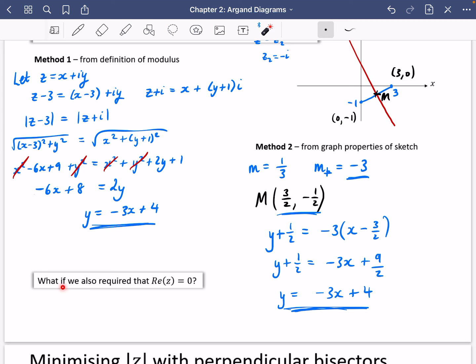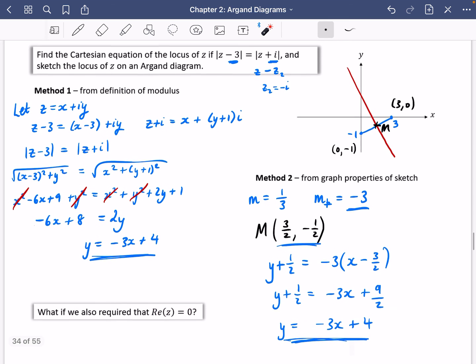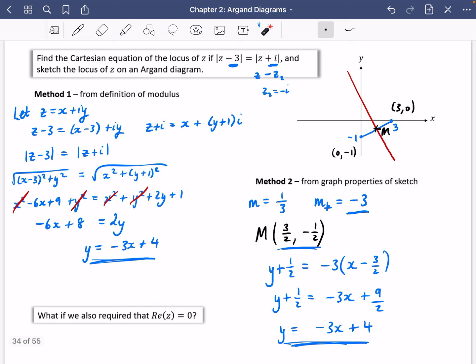It then says here, what if we also required that the real part of Z was equal to 0? Well, as a quick reminder, this is what Z is. So we want the real part of Z to be 0. We can do this from the equation and we can also do it from the graph. If the real part of Z is 0, then X is 0, meaning that Y would just be equal to 4 because I've taken 0 and I've subbed it in here.